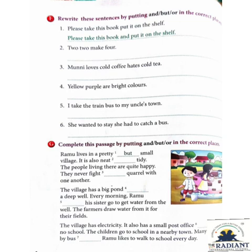Exercise G: Complete this passage by putting 'and', 'but', or 'or' in the correct places. 'Ramu lives in a pretty but small village. It is also neat and tidy. The people living there are quite happy. They never fight or quarrel with one another. The village has a big pond and a deep well. Every morning Ramu and his sister go to get water from the well.'